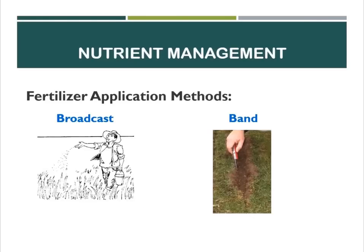Having discussed nutrient deficiency, we should also discuss the fertilizer application methods. First is the broadcast method — spreading the fertilizer uniformly over the soil surface. Band application is spread on a narrow strip along the side of the row plants.